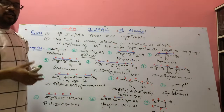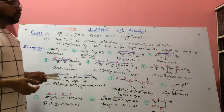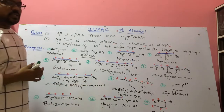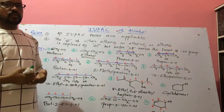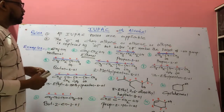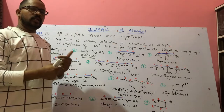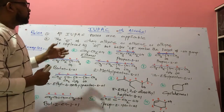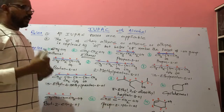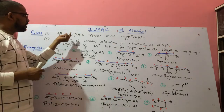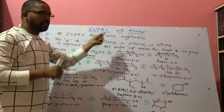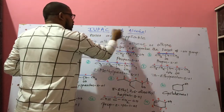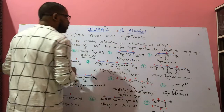We have to switch towards IUPAC. IUPAC is one of the nomenclature systems which is internationally used. IUPAC has its own rules, and if we have to apply IUPAC to any compound for its name, all IUPAC rules are applicable. We have to apply IUPAC to alcohol.